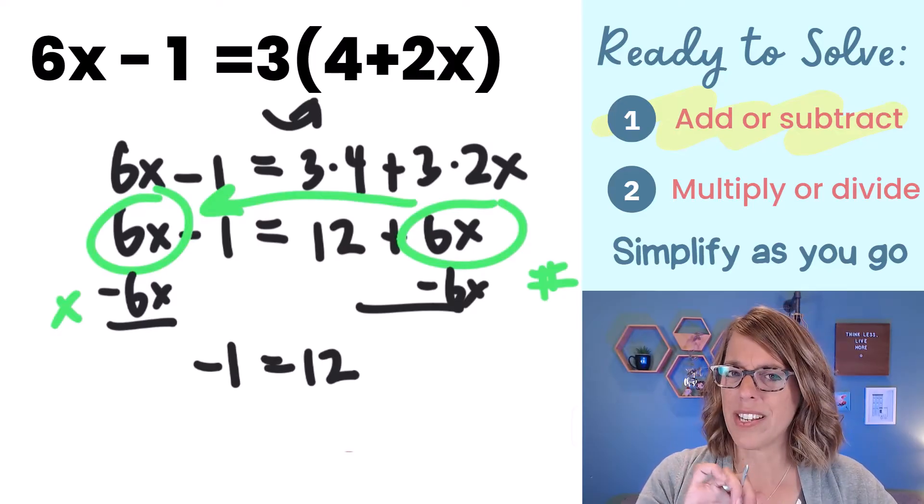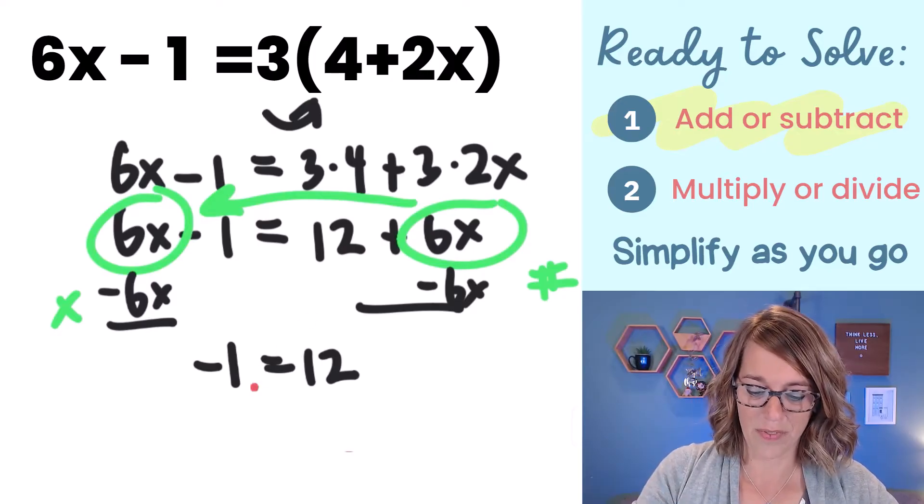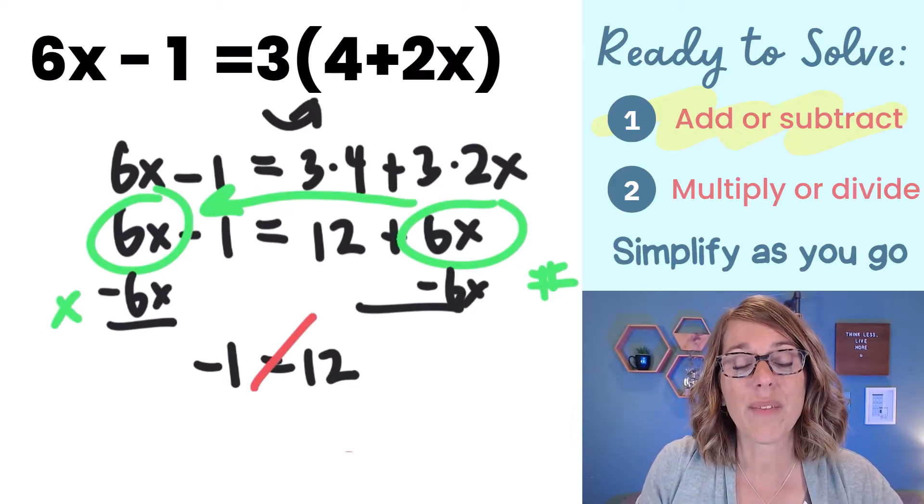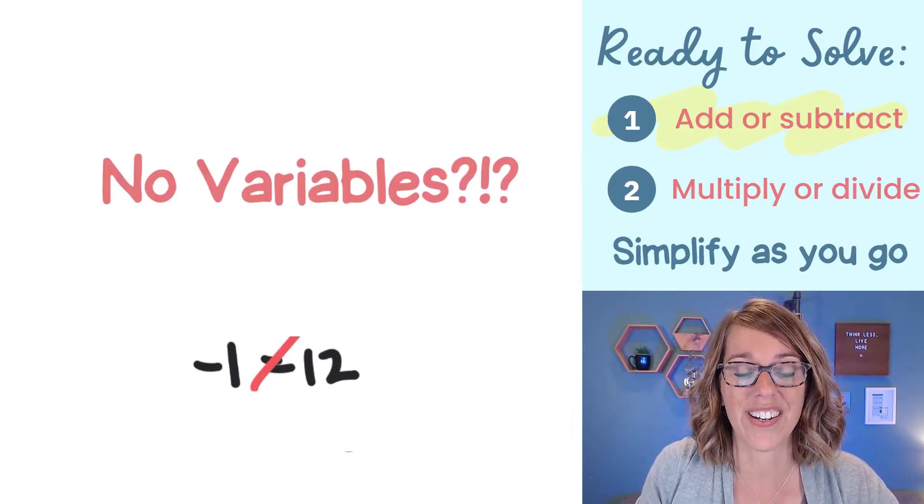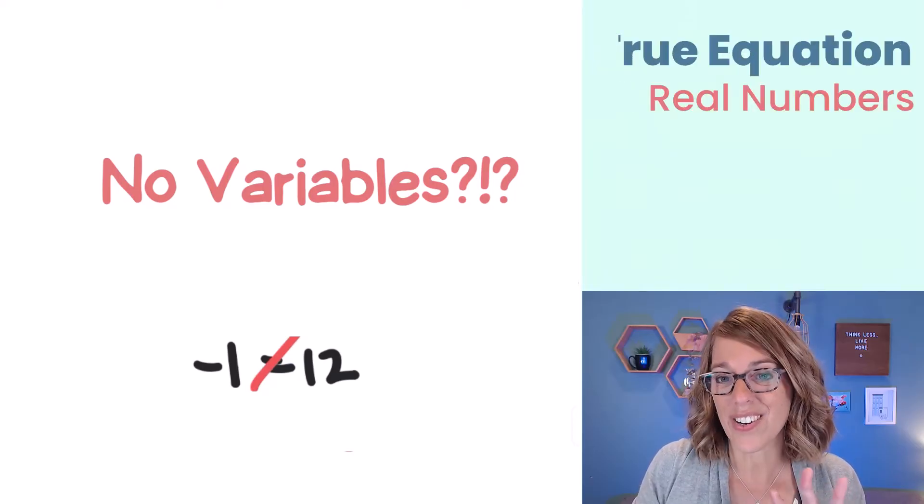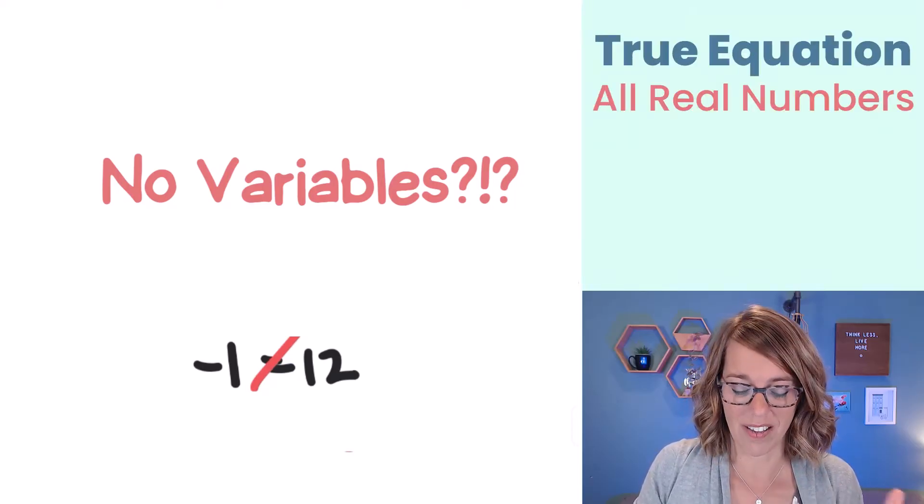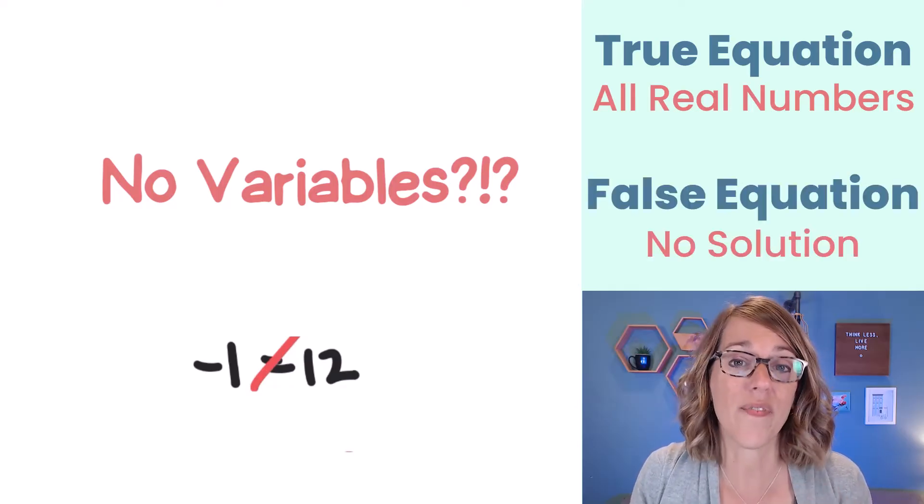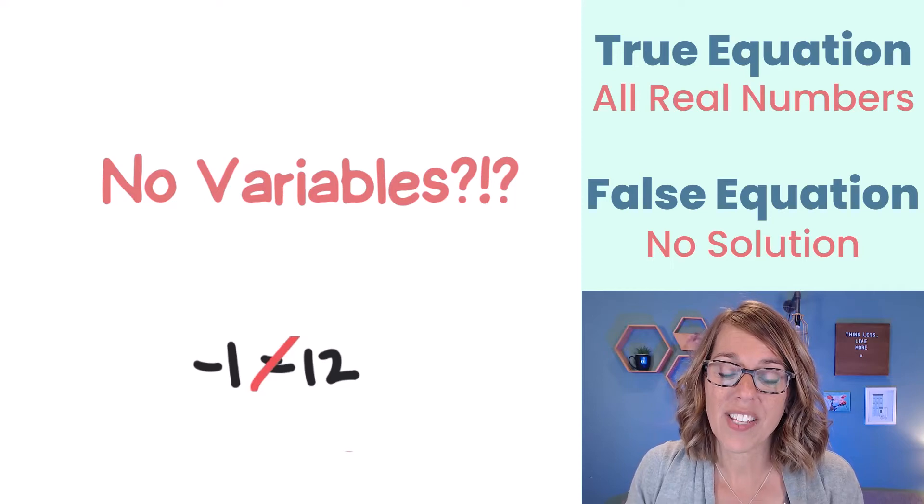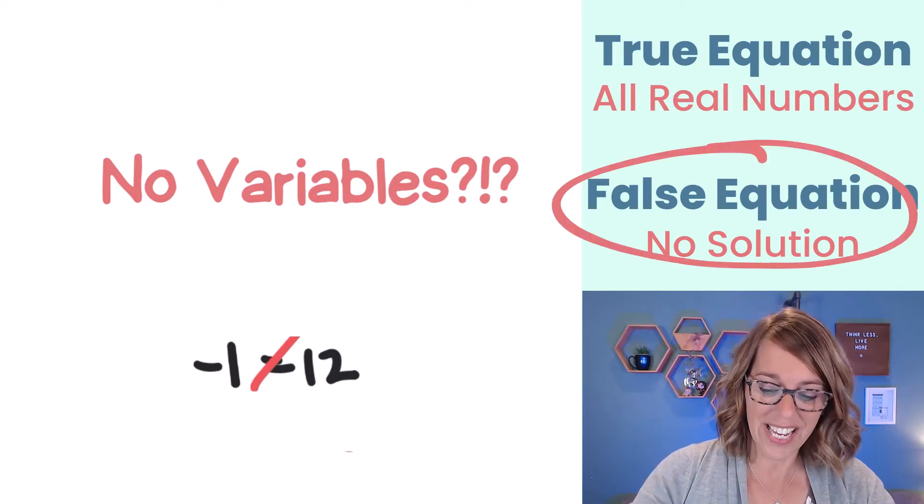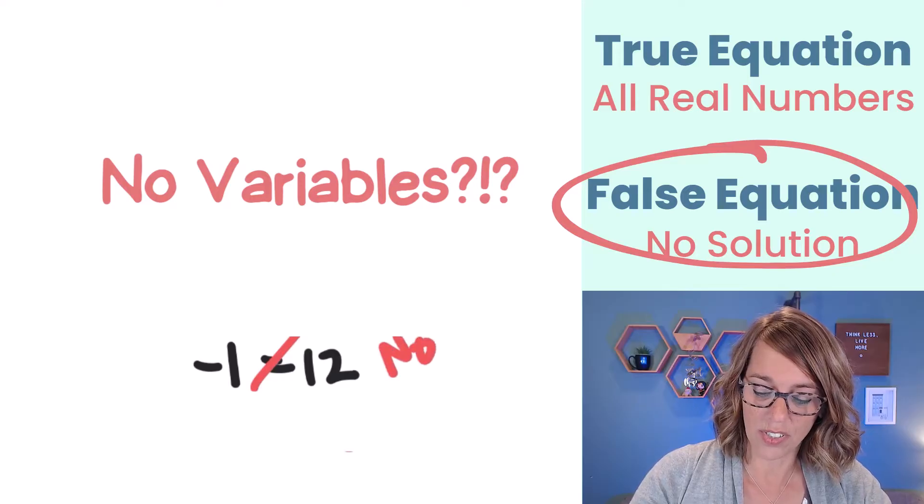Well, negative 1 is actually not equal to 12. So as I'm looking at my solutions here, it means I've got no variables and negative 1 equals 12, that's false. Because we have a false equation, that means that our answer is no solution.